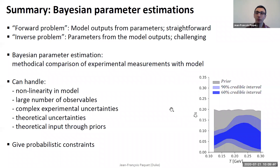If you're lucky, it's going to be a Gaussian distribution in 1D. But if the quantity you're looking at is non-trivial, you may have to look at credible intervals and different marginalizations of your posterior.